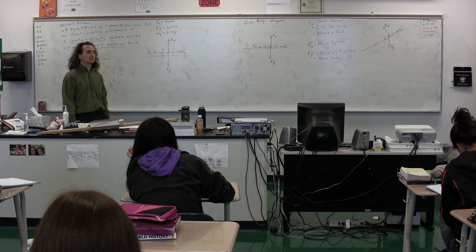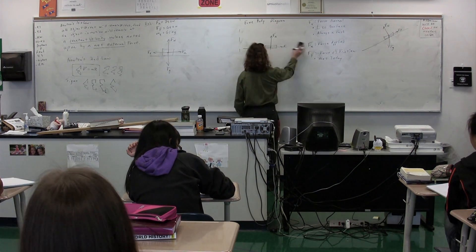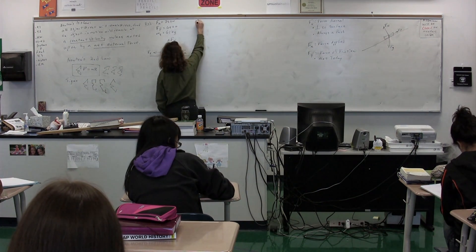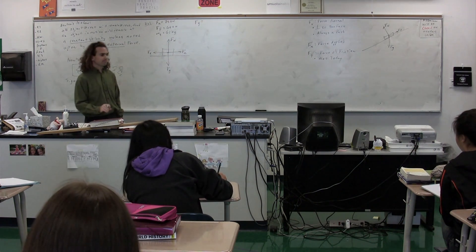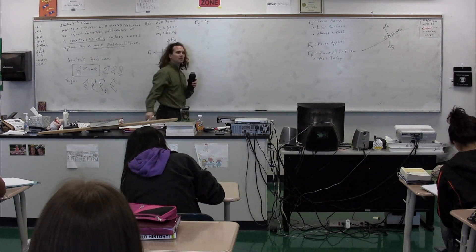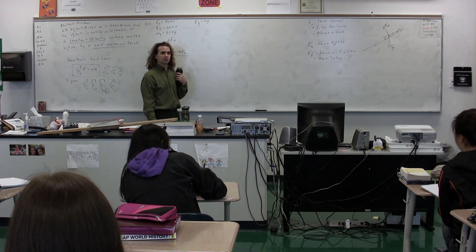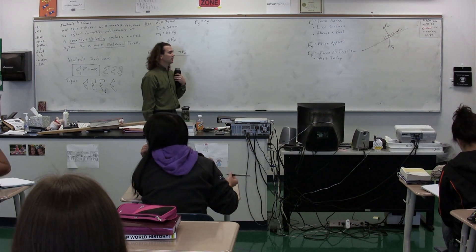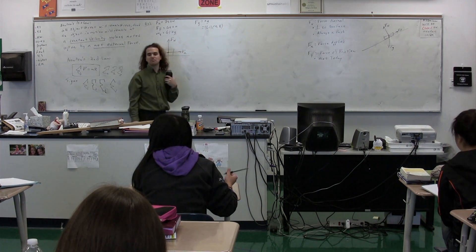We're going to figure out the force of gravity acting on Christina and desk. The force of gravity is equal to mass times g, where g is positive 9.8 meters per second squared. So the mass is 61 multiplied by the acceleration of gravity, which is a positive 9.8 meters per second squared.